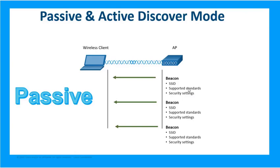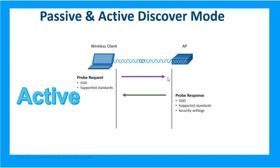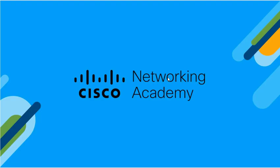There are two modes for discovering wireless networks. In passive mode, the default, wireless routers and access points send out beacons at timed intervals containing all network information. In active mode, the access point is not broadcasting beacons by default, so the wireless client must be manually configured with the correct SSID and supported standards in order to connect. Passive mode is the easy default; active mode is the more difficult manual approach.